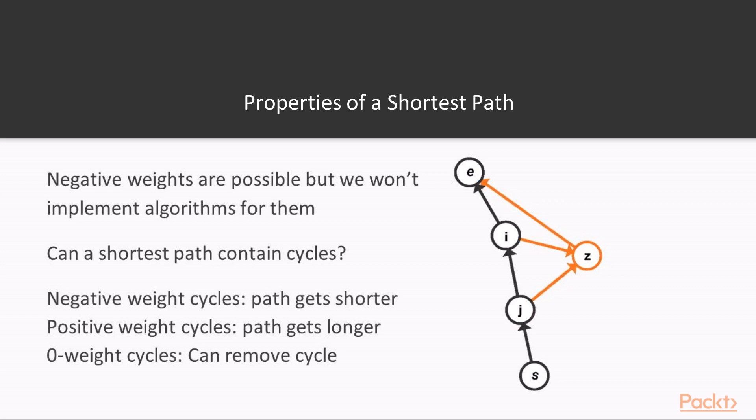If we have a zero weight cycle, we see that if we traverse the cycle, we haven't changed the path weight, and we wouldn't have gotten anywhere closer to the goal. So we can just skip any zero weight cycles, so our shortest path won't contain any cycles of any kind.